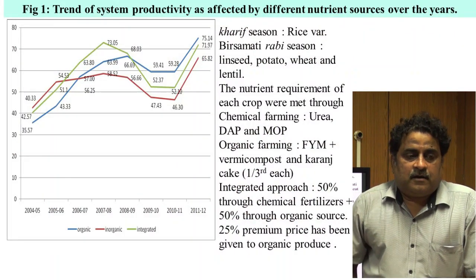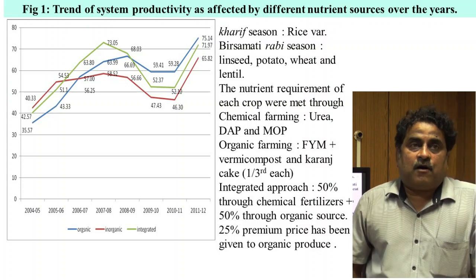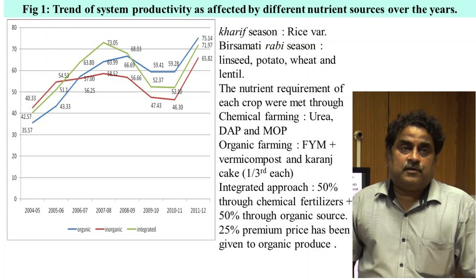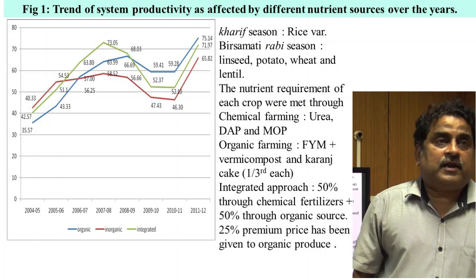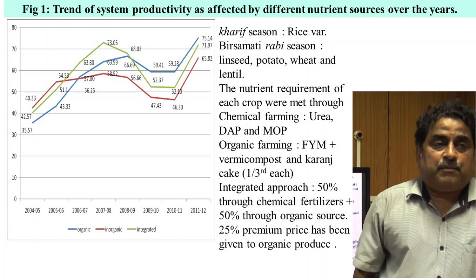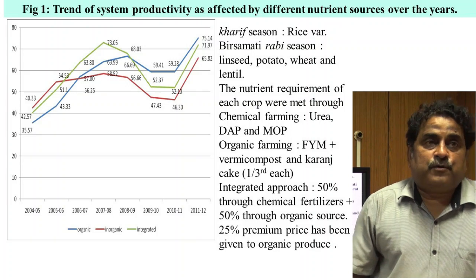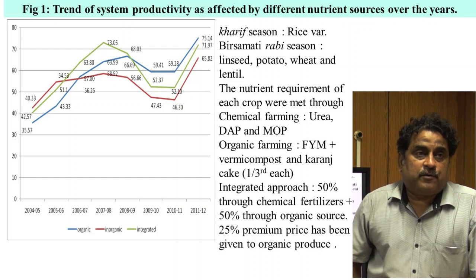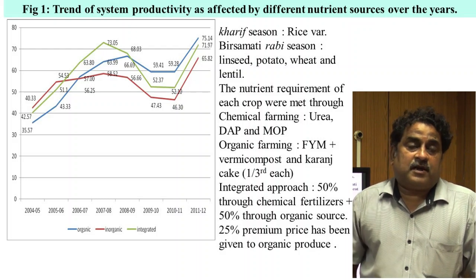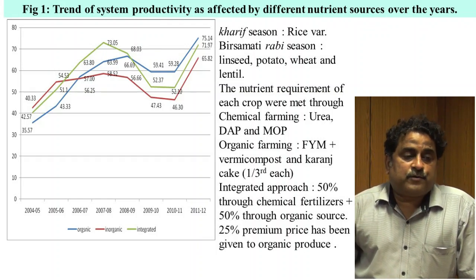A large number of experiments have been conducted and it has been found that there is a two-year conversion period for annual crops and a three-year conversion period for perennial crops. During this conversion period, organic farming production is lower than chemical farming. But after two or three years, organic farming production becomes much higher than chemical farming. It depends upon the crop — for rice, potato, and leguminous crops we get higher yield, but for wheat and other crops the yield advantage is less.